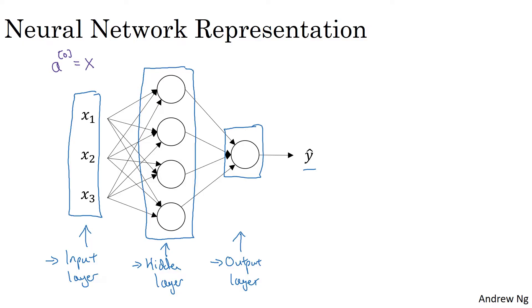So the input layer passes on the value X to the hidden layer. So we're going to call the activations of the input layer A superscript 0. The next layer, the hidden layer, will in turn generate some set of activations, which I'm going to write as A superscript square bracket 1.